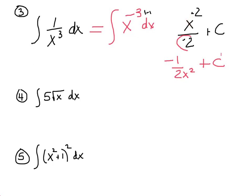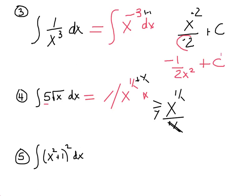Number 4: the integral of 5 radical x. This is a scalar multiple, so the 5 comes out front. Integrate x to the 1 half — add 1, which is 2 over 2, getting x to the 3 halves. Dividing by a fraction is the same as multiplying by its reciprocal, so instead of dividing by 3 halves, I multiply by 2 thirds. With the 5 out front, that's 10 thirds x to the 3 halves, plus c.